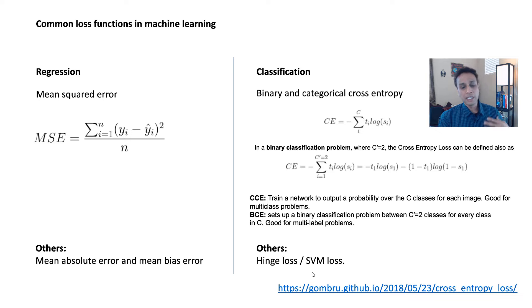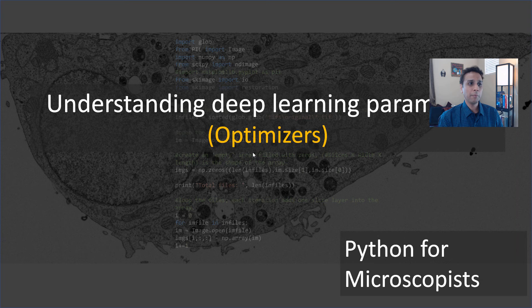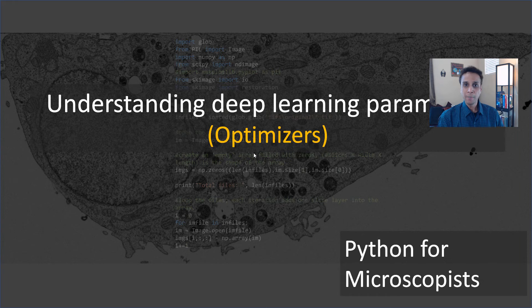So I hope you found this tutorial to be useful, and in the next tutorial, let's actually talk about optimizers, which is one of the three things that we define when we actually do model compile. So let's meet again in the next tutorial. Thank you very much.